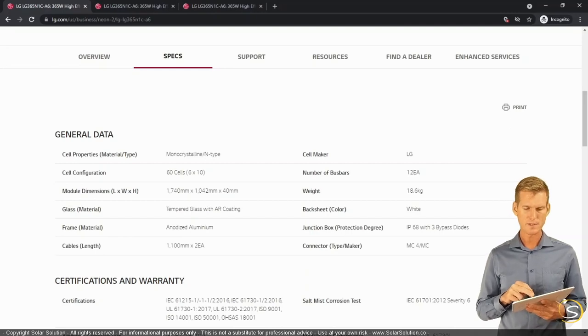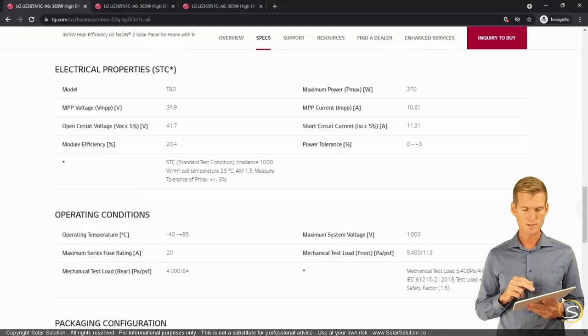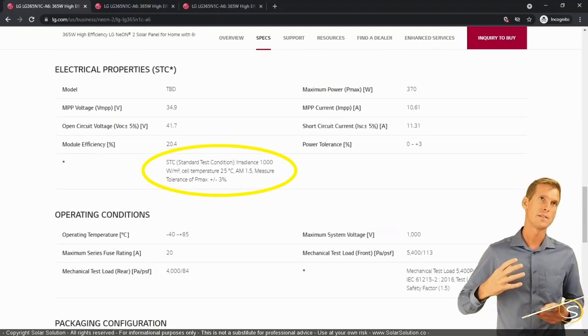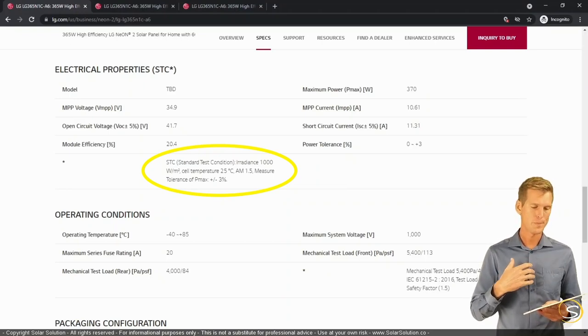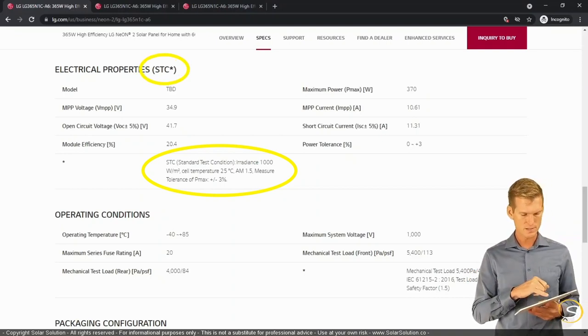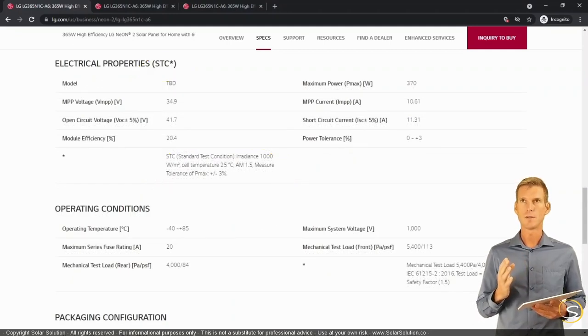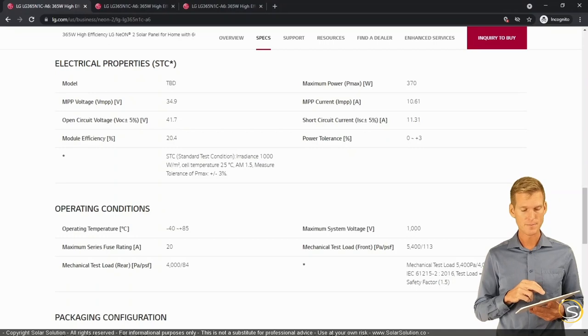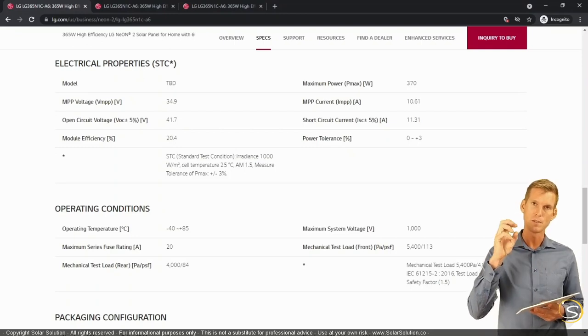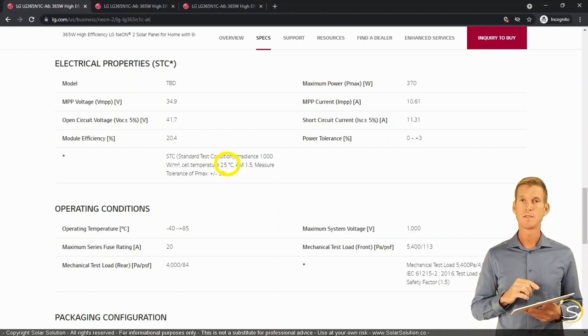So here we are at the electrical properties of this particular model. And it's tested under STC, under standard test conditions, which is quite interesting. So STC is a set of conditions under which you can test the panel. And they will tell you, well under these conditions, if we test in such a way, these are the results. Which is quite important because you can see that they're testing it under an irradiance of a thousand watts per square meters, which is totally possible in real life, but it is relatively high. So depending on where you are in the world, it can be a little bit lower or higher. And the STC works with a cell temperature. So they assume that the cell temperature is always the same. And this is how they test the module. Let's say 25 degrees Celsius, which is 77 degrees Fahrenheit.